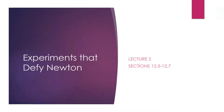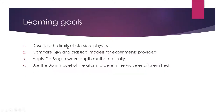Welcome back students for our second lecture of physical chemistry. Today we'll be going through sections 12.5 through 12.7 of the textbook and we'll look at a couple more experiments that define Newtonian mechanics. Our learning goals for today will be the same as last time: describe the limits of classical physics for our experiments, and compare the quantum mechanical and classical explanations for these experiments and why the quantum mechanical proved superior.